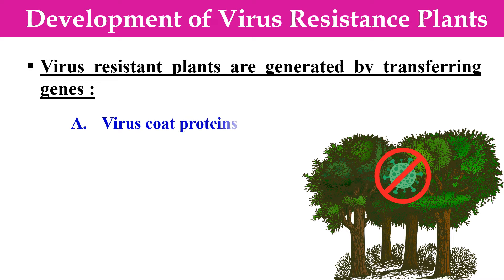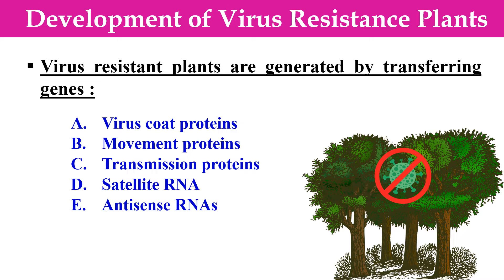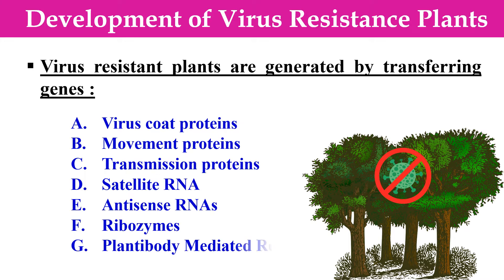In order to generate the virus resistance plant, we can transfer the following genes: virus coat protein genes, movement protein genes, transmission protein genes, satellite RNA, antisense RNA genes, ribozymes, and genes that will make antibodies in the plant cells. Now let us discuss all these mechanisms of making the transgenic plant that is virus resistant in detail.